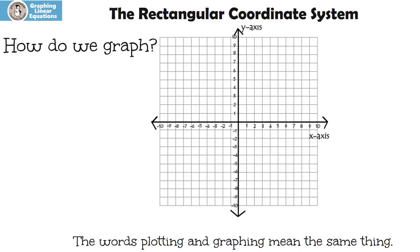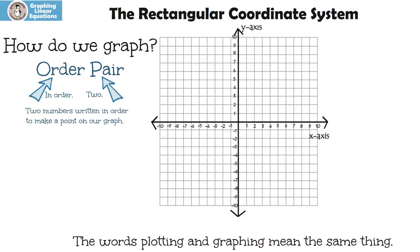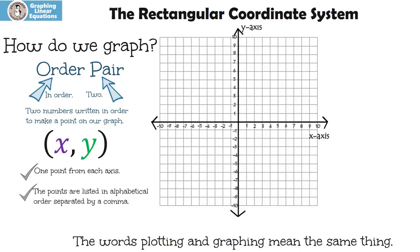So how do we graph? We're going to be graphing using something called an ordered pair. When I think about the words 'ordered pair' — ordered means in order, like when we talk about numbers. The word pair means two. So when we graph, we're going to be graphing two numbers written in order to make a point on our graph. The ordered pairs are always x, y — one point from each axis. The points are always listed in alphabetical order, separated by a comma, and you always place parentheses around the numbers.